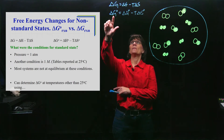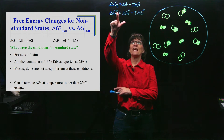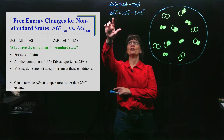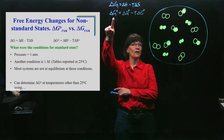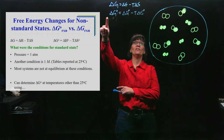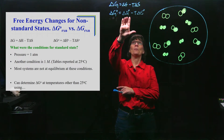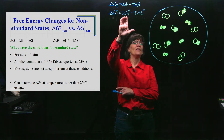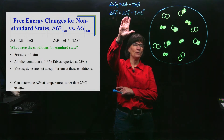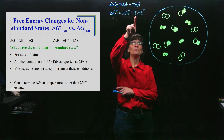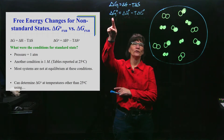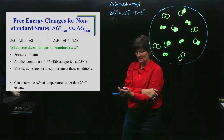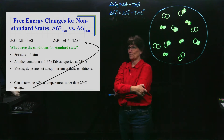The standard delta G values in tables are at 25°C, but if you need a value for delta G that's not at 25°C, you use delta G equals delta H minus T delta S. You get standard delta H and standard delta S from the tables — these don't change significantly with temperature. You put in your new temperature and you get a new delta G, because delta G does change significantly with temperature.